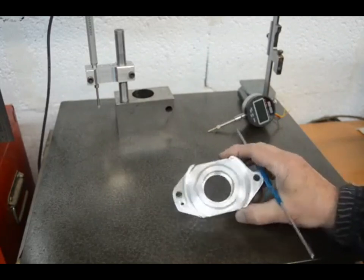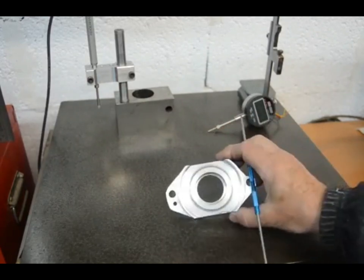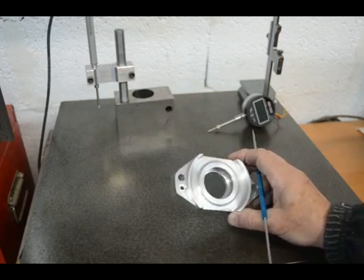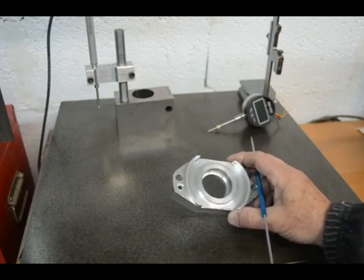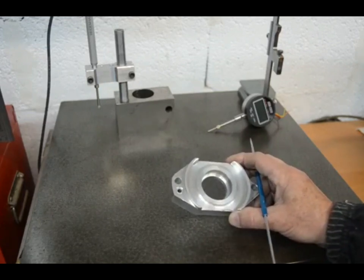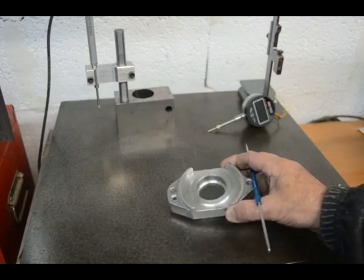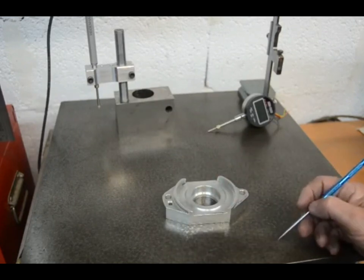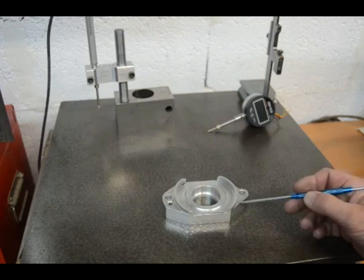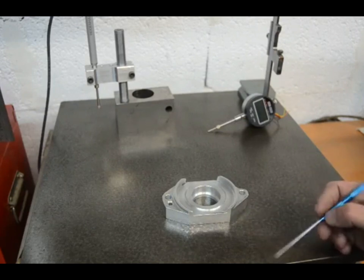I want to make a replica of this bearing housing and the drawing doesn't fall readily to hand, so I need to take some measurements from this. This video is basically just showing how I took these measurements.